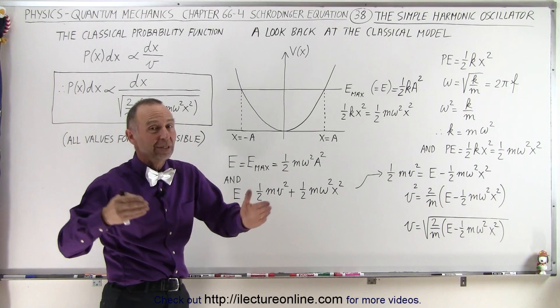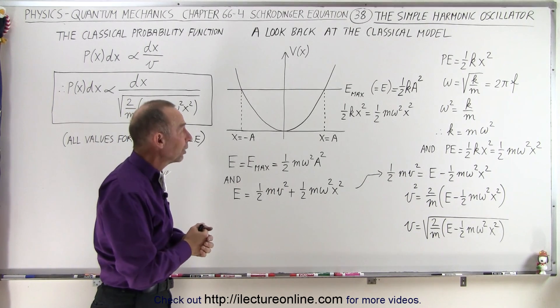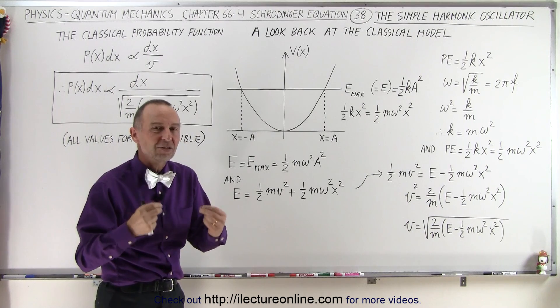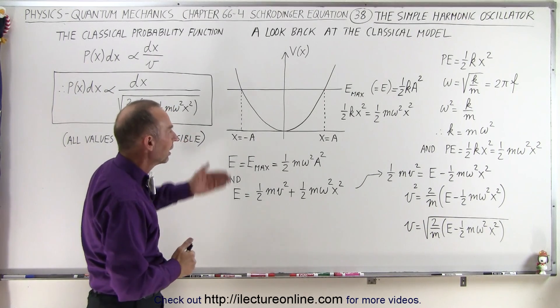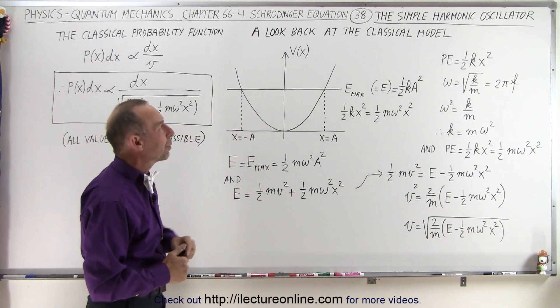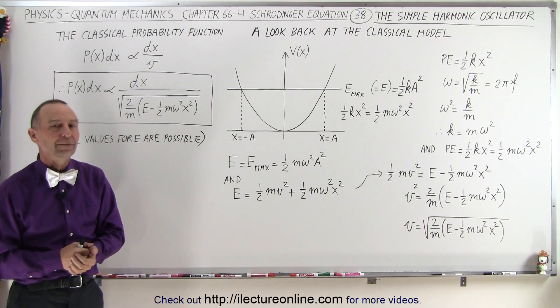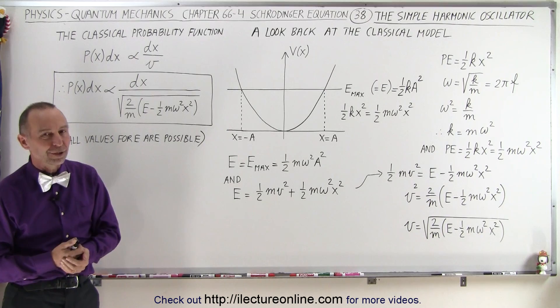We're going to find that, just like with the finite well or the infinite well, that there are certain values of energy that can simply not exist for a small particle, and we're going to find the same thing when we talk about the simple harmonic oscillator in a quantum mechanic setting. And that's up on the next video.